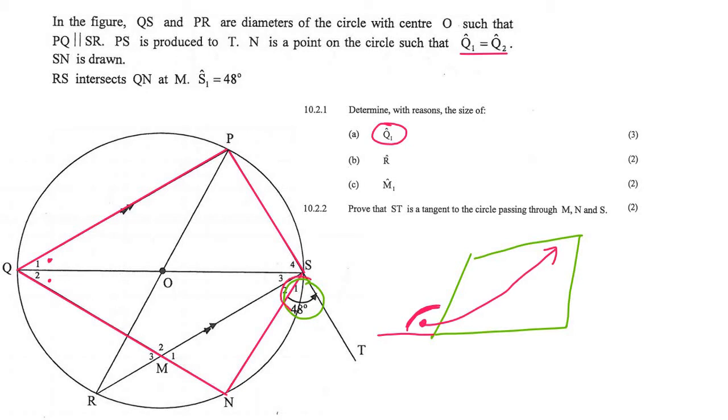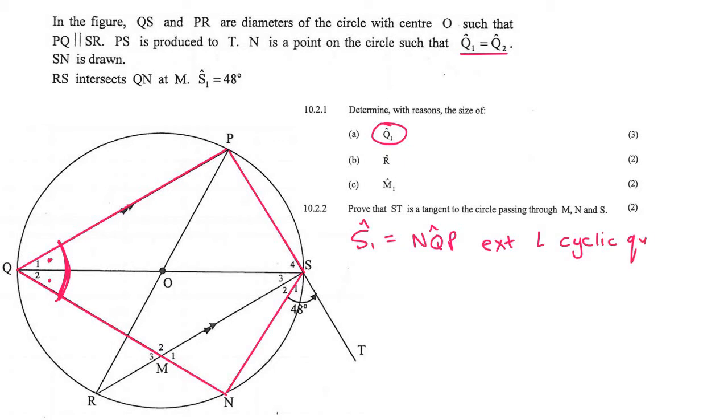So that means that this angle, S1, is going to be the same as the whole of angle Q. They are going to be the same as each other. So we can say that angle S1 is going to be the whole of Q, so we can say NQP, and that's just because of exterior angle of a cyclic quad.